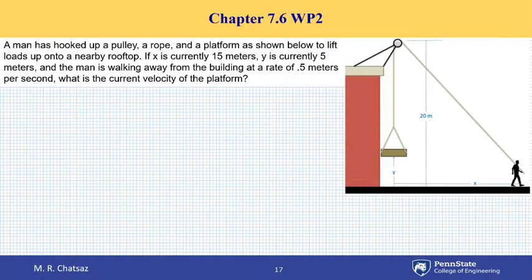Here we have another example of dependent type of motion or simply dependent motion. The diagram shows a man that has hooked up a pulley, a rope and a platform as shown to lift loads up to a nearby rooftop.